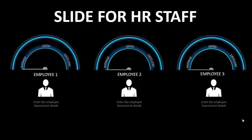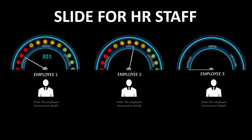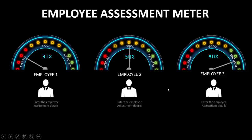This slide is very useful. For example, when I click, on first click it will show that Employee One is Average with a 30% score, Employee Two is Good with a 50% score, and Employee Three is Excellent with an 80% score.